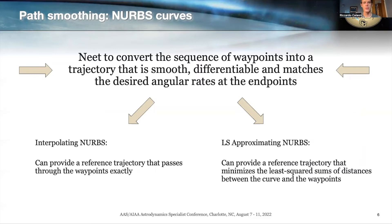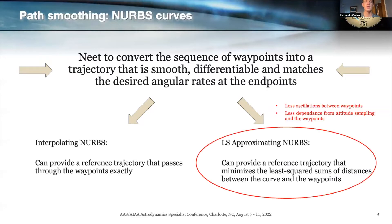NURBS curves can be broken down into interpolating NURBS, where trajectories interpolate the waypoints precisely, and least-square approximating NURBS, which do not interpolate waypoints precisely but provide a least-square approximation. This paper focuses on the second approach, which is preferable because interpolating NURBS shows oscillations in the trajectory arising from the necessity of interpolating those waypoints — constraining the trajectory in a way that makes it oscillate and therefore requiring additional torque. The least-square approximating NURBS has less dependence on the attitude waypoints, which are just used as guidance and are effectively an artificial constraint.